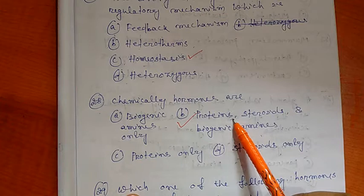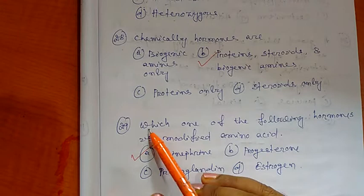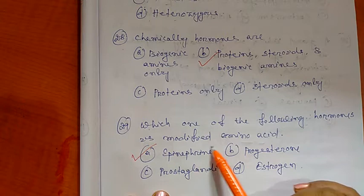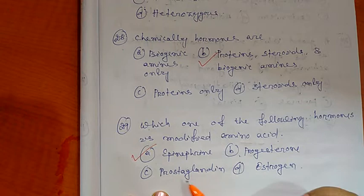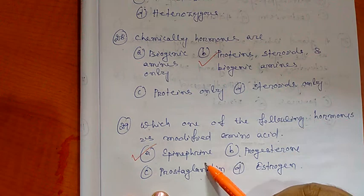Question number 29: Which one of the following hormones is modified amino acid? Options are A) Epinephrine, B) Progesterone, C) Prostaglandin, and D) Estrogen. So the right option is epinephrine. Thank you friends for watching. In my next video I will discuss some more questions regarding the endocrine glands and their secretion. Bye.